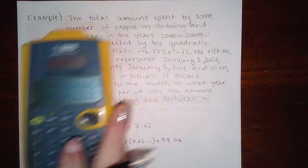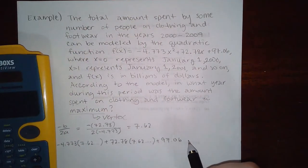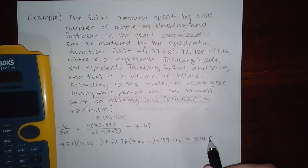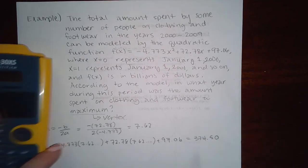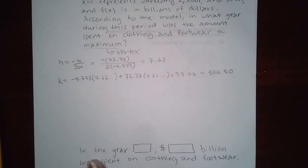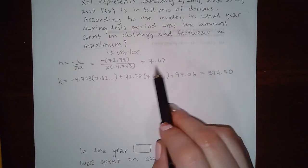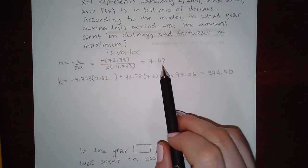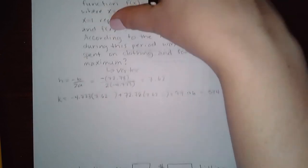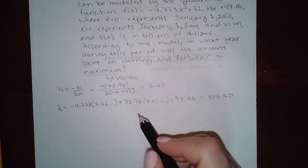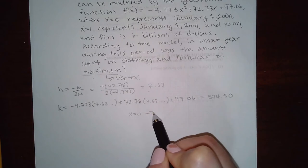And then plus 72.78 times that same answer plus 97.06. And so we get this number, and that I round: 374.50. Okay, so in what year? Well, it had passed this amount of time. This one's a little bit confusing because you know that x equal to zero is 2000.